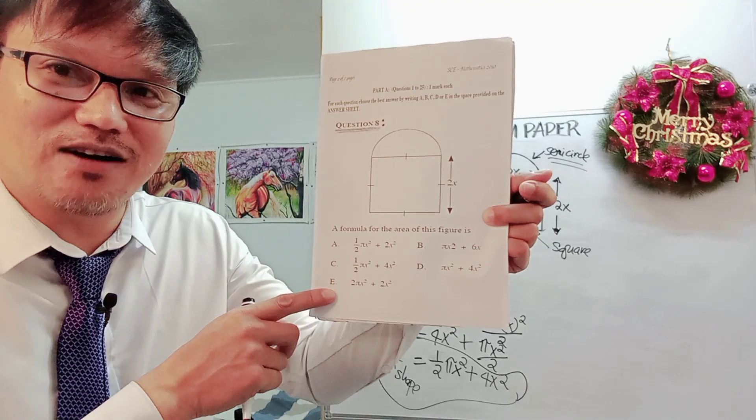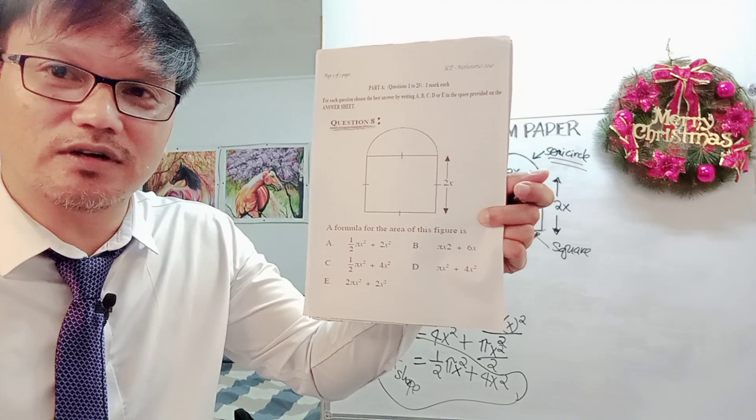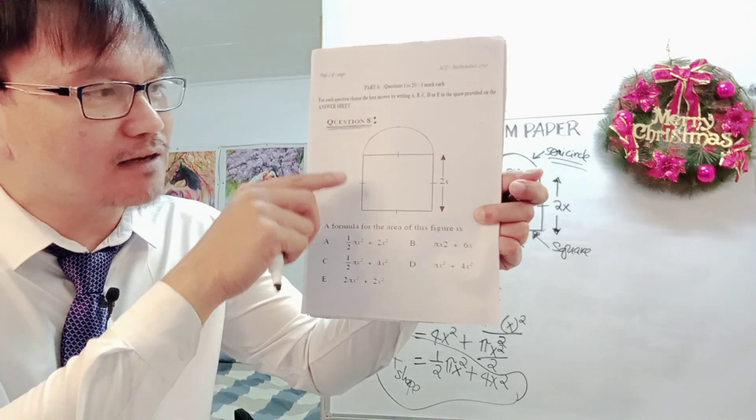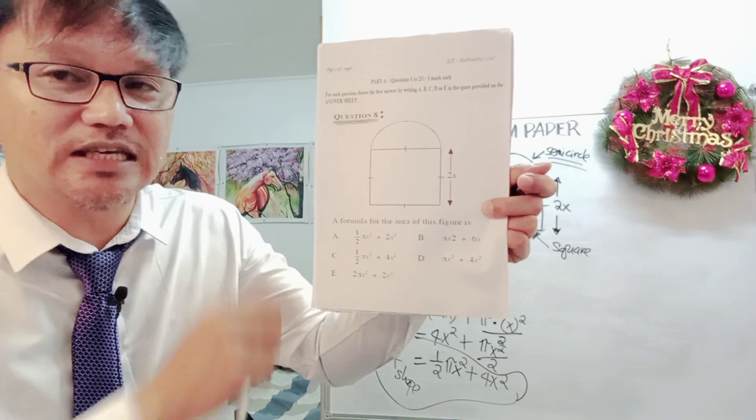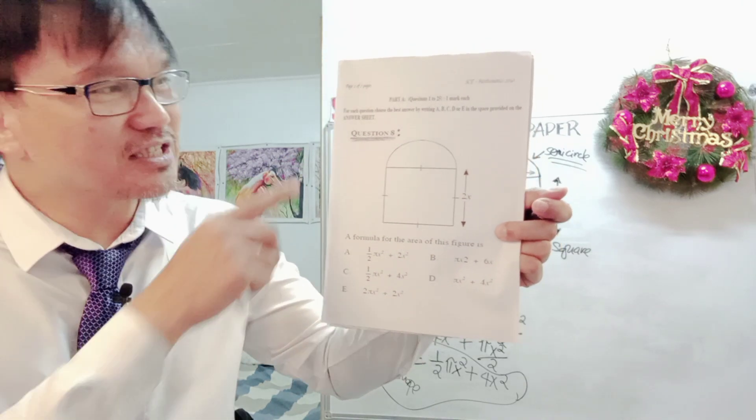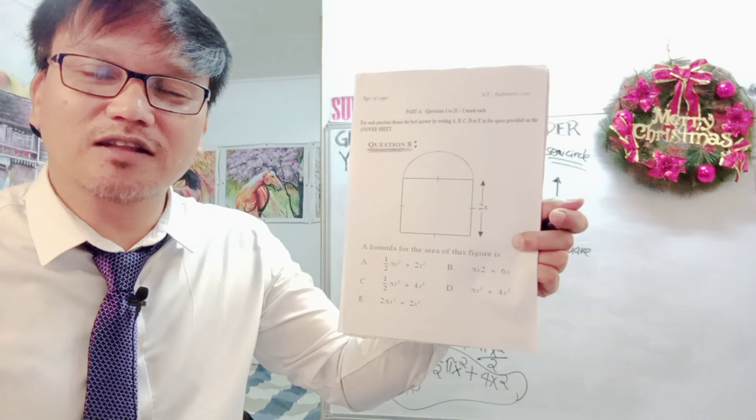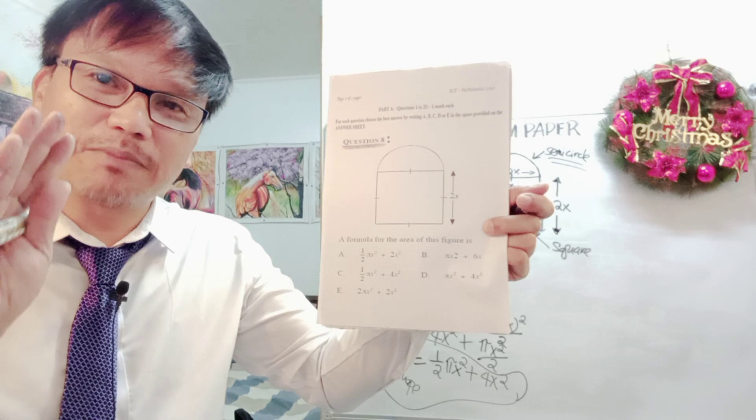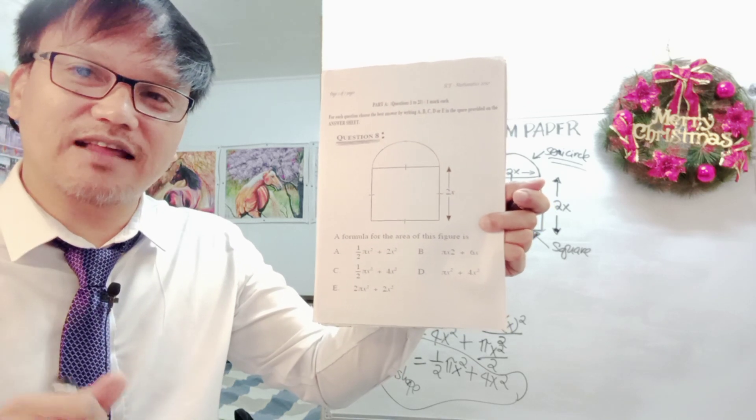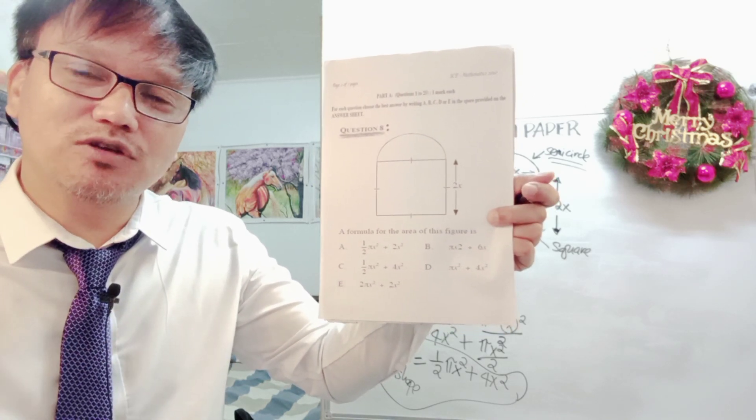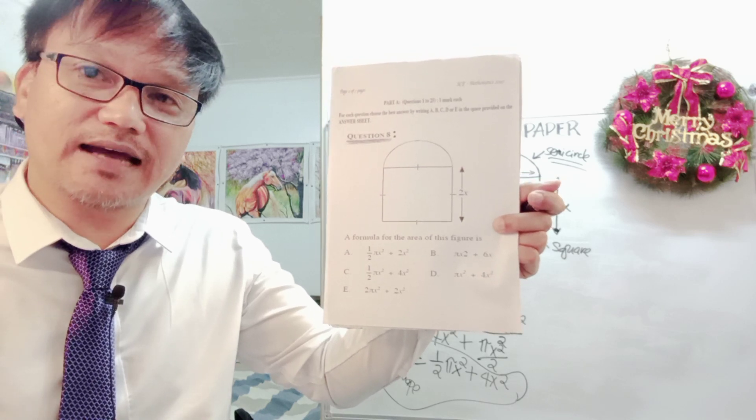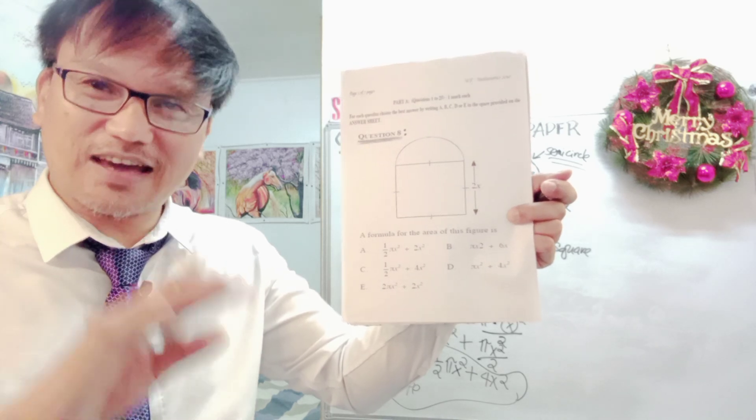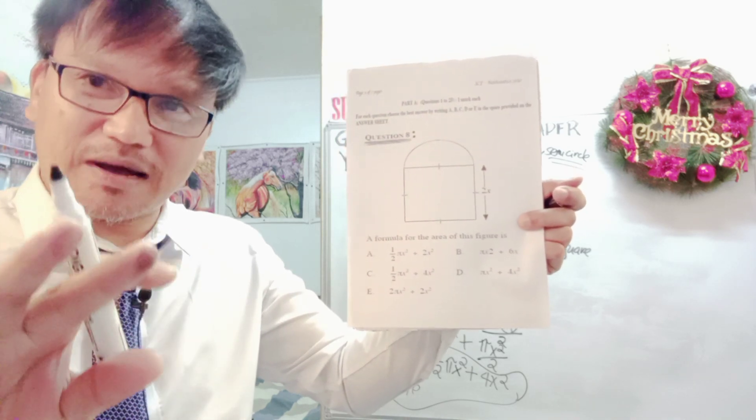I hope that is clear to you now and that is how you work out finding the formula of the area of a given composite shape. This is question number 8, 2010, mathematics for grade 10. Please subscribe and tell others to watch this video, my YouTube channel, so you will all be guided in the preparation for the National Examination in October. Thank you and bye for now.